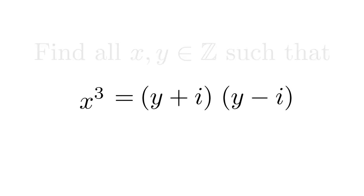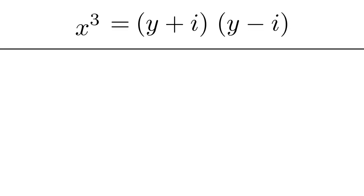The first thing we notice is that y² + 1 factors as (y+i)(y-i). It's this factorization which suggests to us that the Diophantine equation might be amenable to an attack via the Gaussian integers.